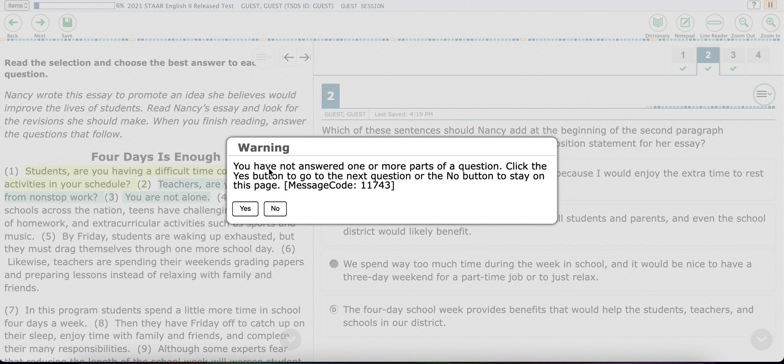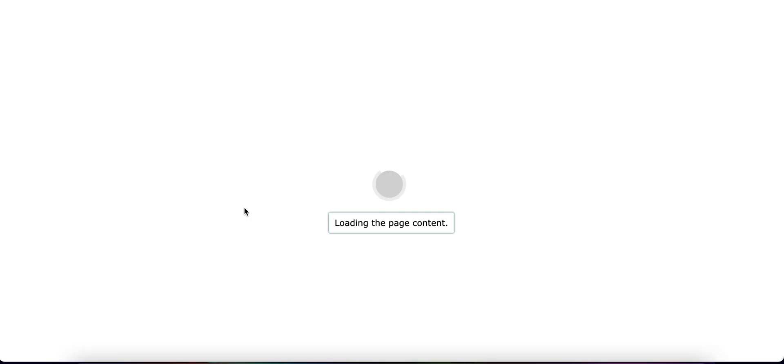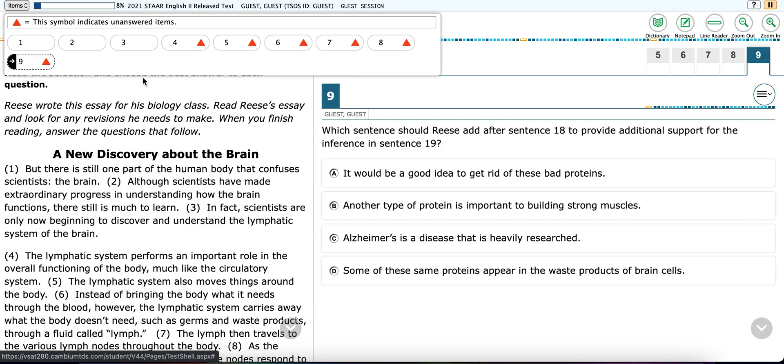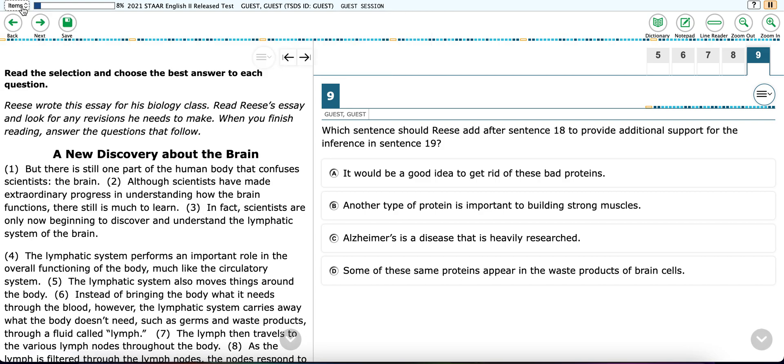Also notice when I click to skip questions, it will say you have not answered one or more parts of a question. Click the yes button to go to the next question and no to stay on this one. So if I click yes, it will actually take me to question nine. But again, it's just a way to warn me that I still have a whole bunch of questions I did not answer. So there's a lot of ways to make sure that you're answering all the questions and make sure that you do not submit the test until you have answered all the questions.